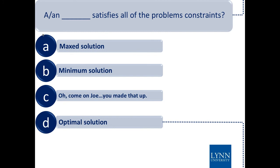In linear programming you can either be maximizing or minimizing, so the optimal solution is either the max or the min depending on which one you're trying to do.